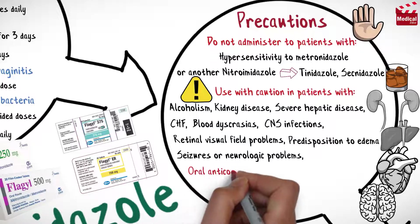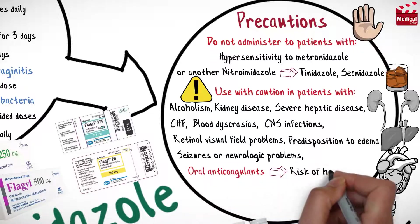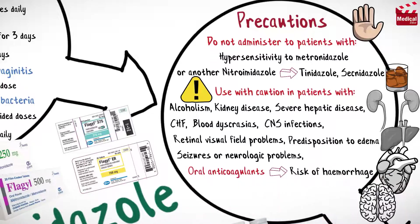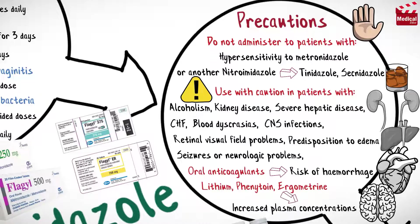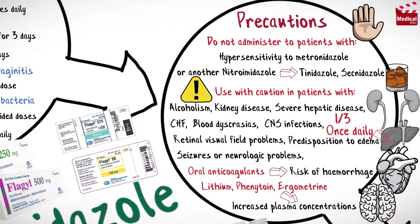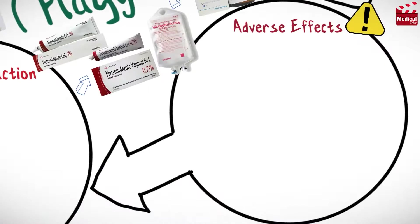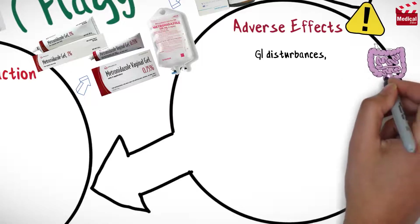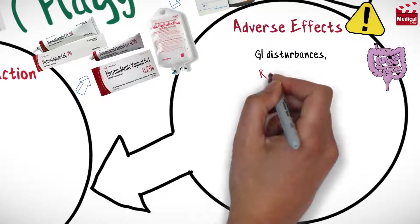taking oral anticoagulants because of risk of hemorrhage. Lithium, phenytoin, and ergometrine: metronidazole increases plasma concentrations of these drugs. Reduce total daily dose to one-third and give once daily to patients with severe hepatic impairment.